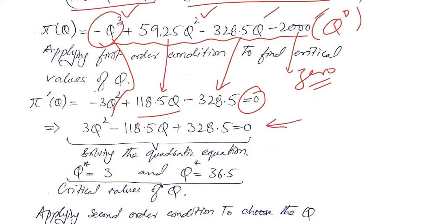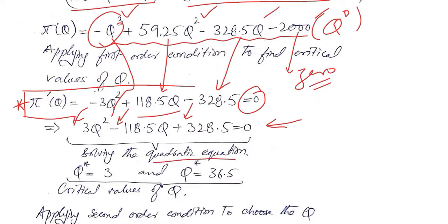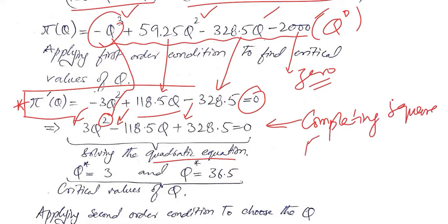We now have this function — it is a quadratic function. The change we brought is that we took minus 1 as a common factor, so the negative turned to positive and the positive turned to negative. We will keep this first order derivative safe because we will be taking its second order derivative, but right now we need to solve this equation to get the critical values of q. We can solve this quadratic equation by completing the square, by factorization, or by the quadratic formula.